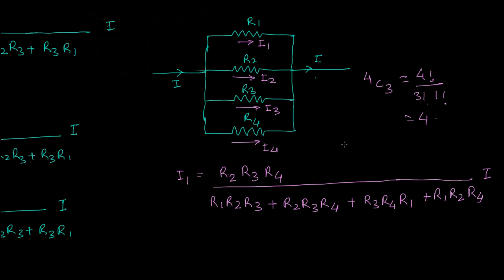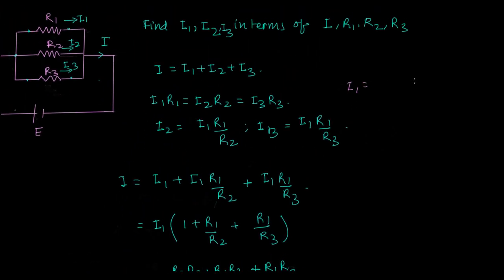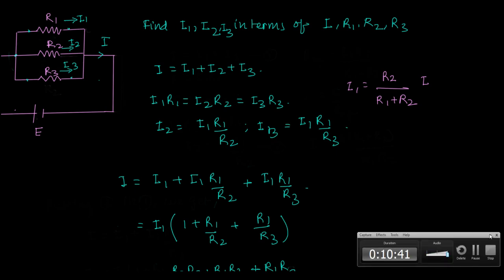You can extend this to any number of resistors. If there are 2 resistors, take 1 at a time; if there are 3, take 2 at a time; if there are 4, take 3 at a time — always excluding the resistor you are solving for. So for two resistors, i1 equals r2 divided by (r1 plus r2) times i, which matches the earlier result.